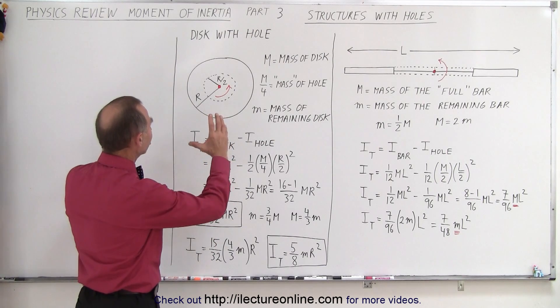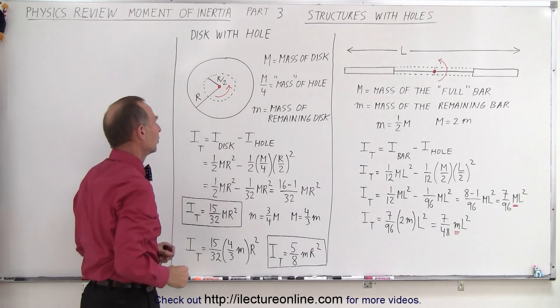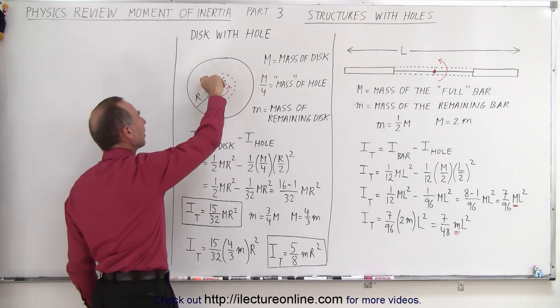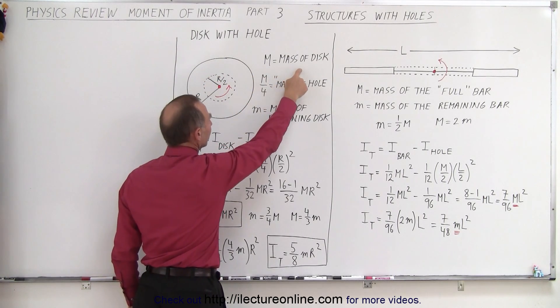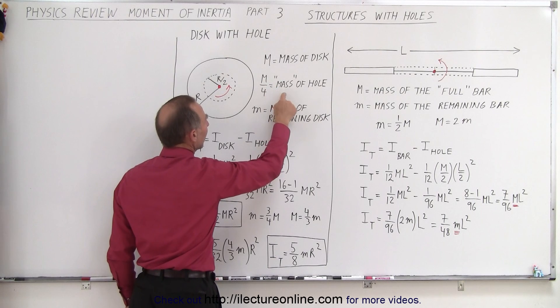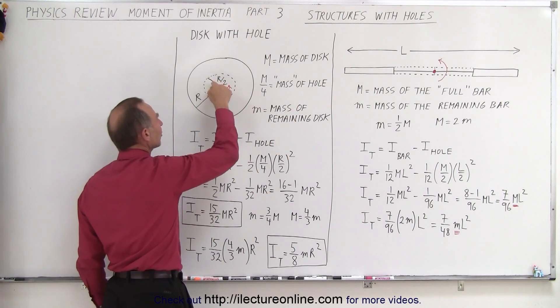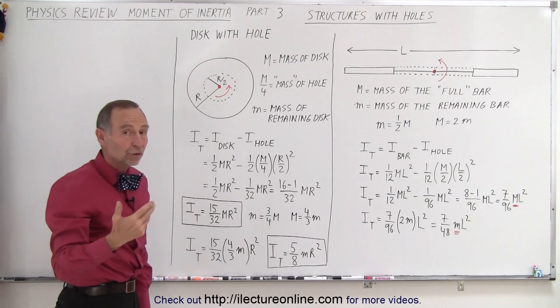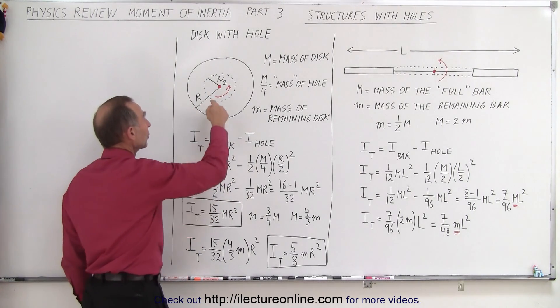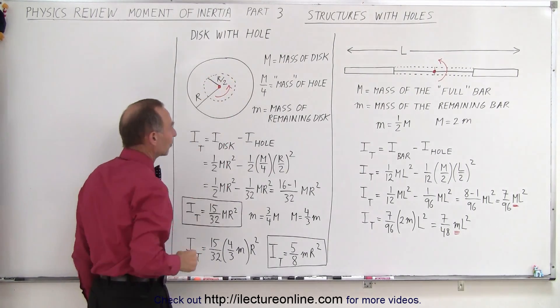How about a typical problem like a disk with a hole at its center? Notice that the radius of the hole is half the radius of the total disk. Big M, again, is the mass of the disk. M/4 is the mass of the hole. If the radius is half the radius of the total disk, then, of course, since the areas are squared, radius squared, we end up with one-quarter the total mass.